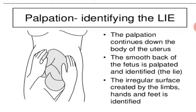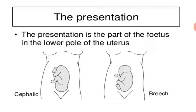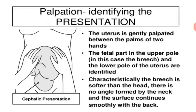Palpation continues down the body of the uterus. The smooth back of the fetus is palpated and identified, then the irregular surface created by the limbs, hands, and feet is identified. The presentation is the part of the fetus in the lower pole of the uterus.